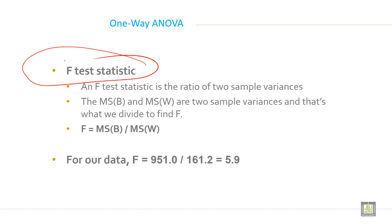So F equals MS(B) divided by MS(W). For our data, when you divide, you will get 5.9. This is your F value, F calculated.